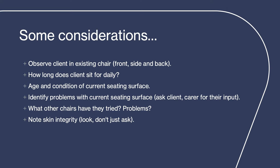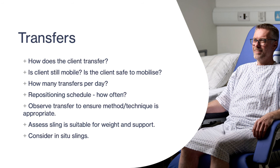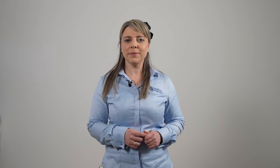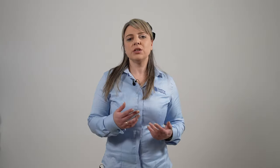Note the skin integrity — look, don't just ask. When it comes to transfers, ask how the client transfers, whether the client is still mobile and whether it is safe for them to mobilize. Always observe the transfer method, and ask how often they are repositioned and if there is a repositioning schedule. Observe the transfer to assess whether that method is recommended and suitable. Assess the sling if they use one, ensuring it is adequate. Consider in-situ slings if appropriate — patients with dementia can find insertion and removal of slings very distressing, so in-situ slings can really benefit their quality of life.